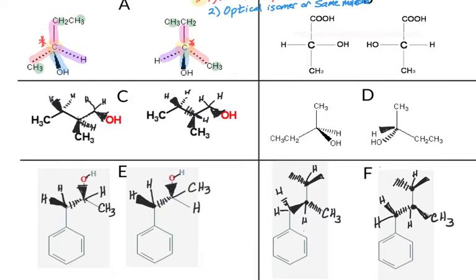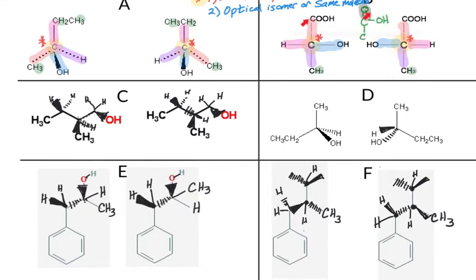Let's look at set B. We have three carbons to examine, starting at the bottom. That one has three hydrogens, so it is not asymmetric. The middle one has a hydrogen, an OH, a carboxylate group, and a CH3 group — four different things — so that is your asymmetric carbon, and the same is true in the other molecule. The top carbon has two bonds to oxygen and another bond to a third oxygen, so we don't have four different groups; two bonds go to the same oxygen, so that one is not asymmetric. Set B has only one asymmetric carbon.